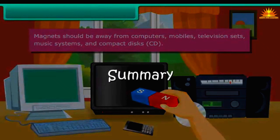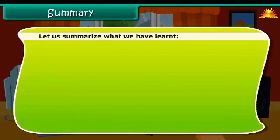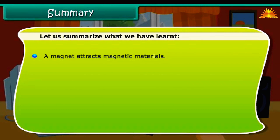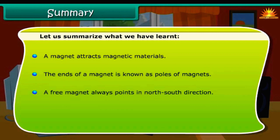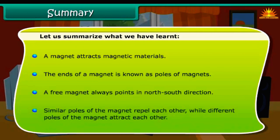Summary. Let us summarize what we have learned. A magnet attracts magnetic materials. The ends of a magnet are known as poles of magnets. A free magnet always points in the north-south direction. Similar poles of the magnet repel each other, while different poles of the magnet attract each other.